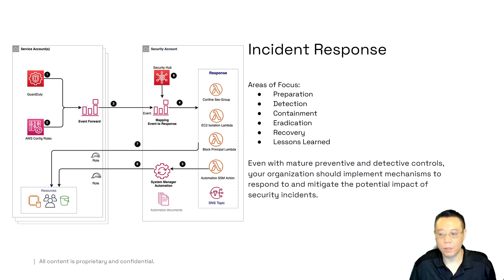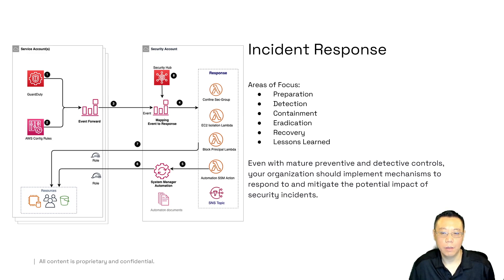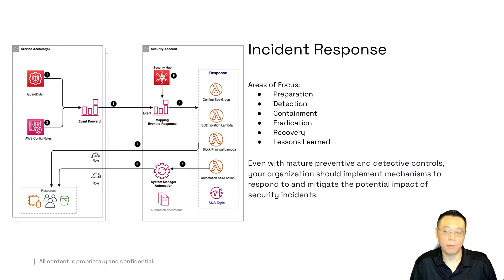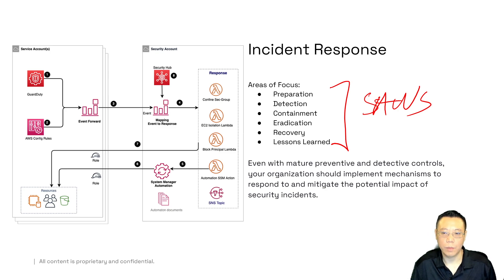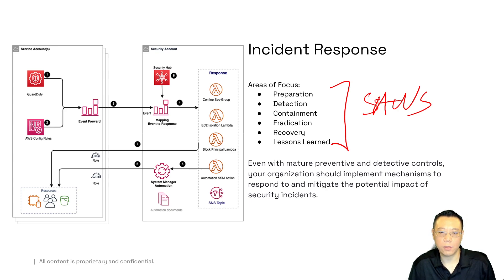Last but not least is incident response. Incident response is all about preparation, detection, containment, eradication, recovery, and lessons learned. This is a little bit different from the NIST cybersecurity framework incident response, although it does overlap — this is actually known as the SANS original model. SANS is a community-driven and community-maintained security education facility for cybersecurity-related professionals. It hosts a bunch of different certifications, and this is actually one of the most popular incident response models, even before the NIST CSF came out.